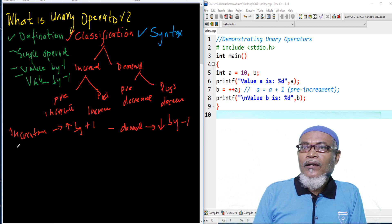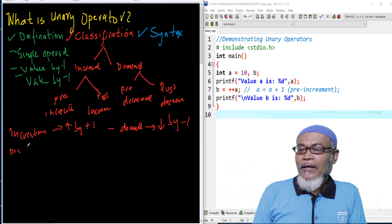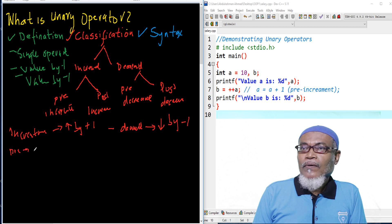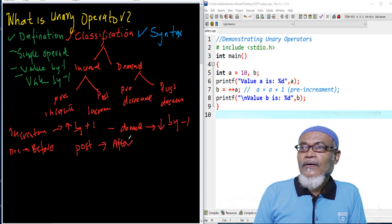And then, there is another word which we talked about: it is pre. The pre means before, before the variable. And then, we have another word called post. So, the post means after, after the variable itself. So basically, that is the definition and the classification of this unary operator.